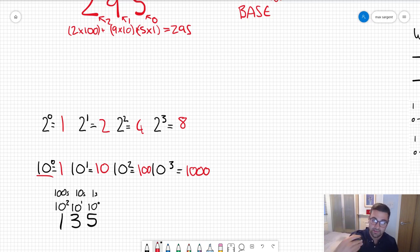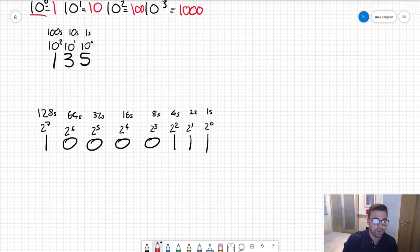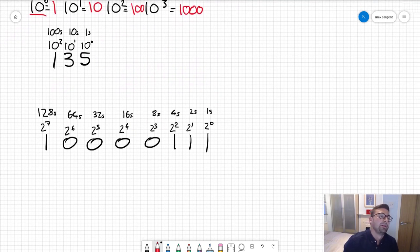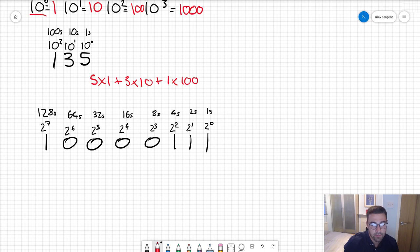Let's just cement our understanding with a fully worked example. Here we've got 135. How we do this in denary you all know this now: it's five times one, three times ten, one times a hundred.